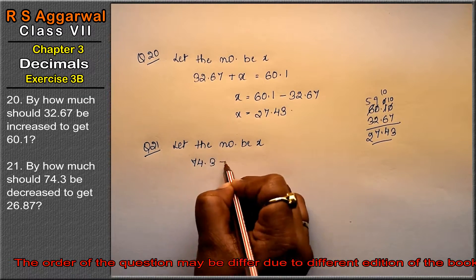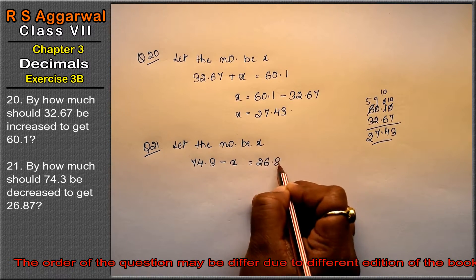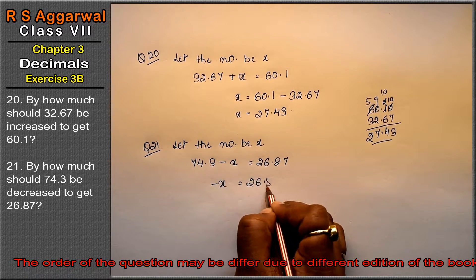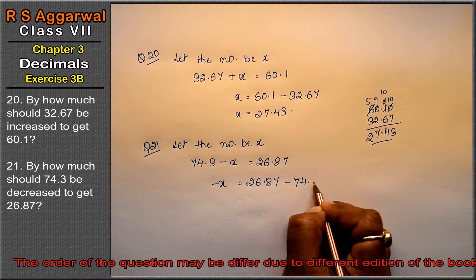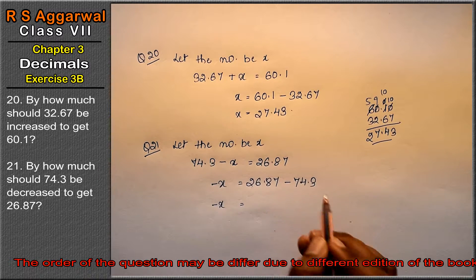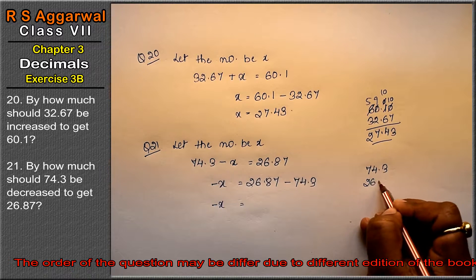26.87? So let the number be x. So we have 74.3 minus x. So on this we have definition of 26.87. So we have x equals 26.87, so minus x as it is, 26.87 as it is. Plus on this side, minus is the thing that is minus here, minus at this point.